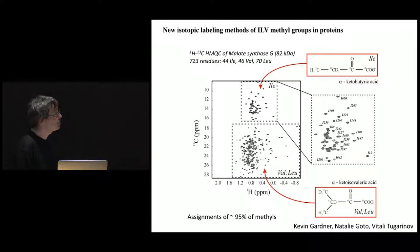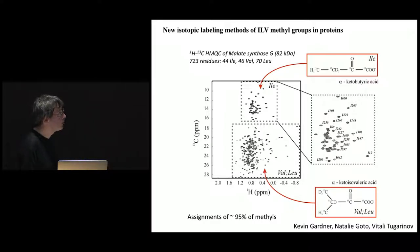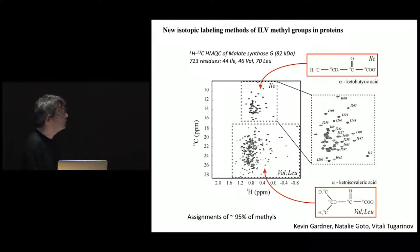How does one produce such proteins? Nowadays it's very easy — one can simply buy precursors: ketobutyrate and isovalerate. Ketobutyrate is the precursor for isoleucine, and specifically the 13C-H3 methyl group will be the source of signals for the delta-1-methyl position of isoleucines. In the context of isovalerate, the 13C-H3 methyl group provides signals for leucine and valine methyls. Only one of the two methyls of leucine and valine will be NMR active — 13C and H3 — while the other is 12C-D3 and NMR inactive.